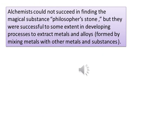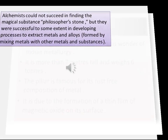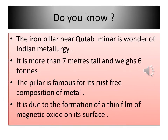Alchemists could not succeed in finding the magical substance — the philosopher's stone — which they thought could be used to convert base metals like copper into gold. But to some extent they did succeed in developing processes that helped to extract metals and alloys. Do you know the iron pillar near Qutb Minar in New Delhi was made around 400 BC? This iron pillar is rust-free due to the formation of a thin layer of magnetic oxide on its surface. Magnetic oxide is a chemical used to prevent the rusting of iron substances.